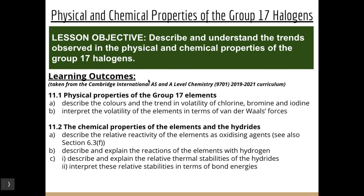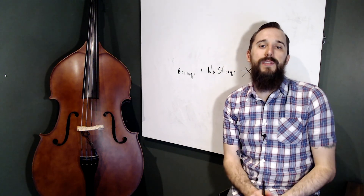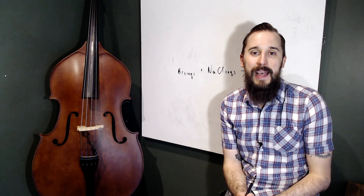That concludes our first lesson on the Group 17 halogens. We covered: colors and volatility trends of chlorine, bromine, and iodine; interpreting volatility in terms of van der Waals forces; the relative reactivity of halogens as oxidizing agents; their reactions with hydrogen; and the relative thermal stabilities of hydrogen halides in terms of bond energies. Work through the practice tasks to consolidate your understanding, and I'll see you in the next lesson. Have a fabulous day!